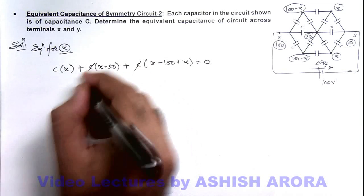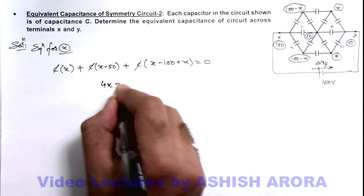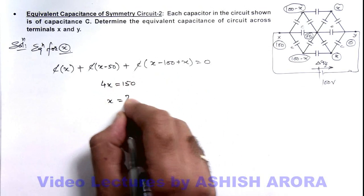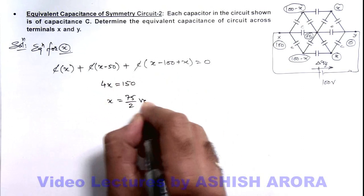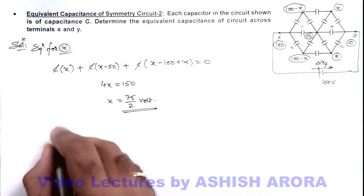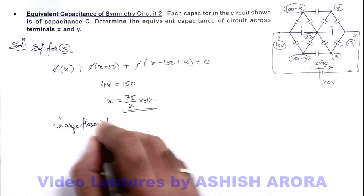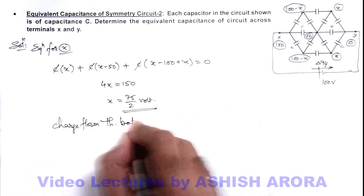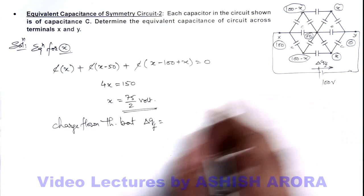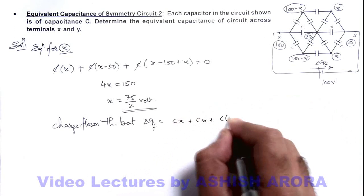C cancels out. Simplifying gives 4X equals 150, which gives the value of X as 75/2 volts. So having found X, we can determine the charge flowed through the battery, delta Q, which is the sum of those three charges: C·X plus C·X plus C times 50.